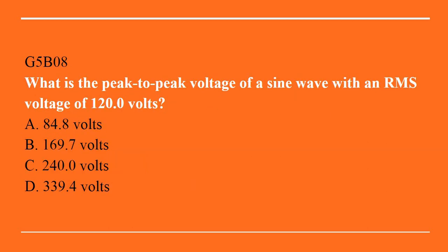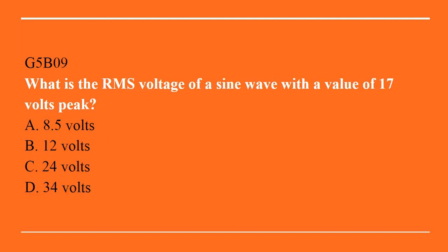G5B08: what is the peak-to-peak voltage of a sine wave with an RMS voltage of 120.0 volts? A. 84.8 volts. B. 169.7 volts. C. 240 volts. Or D. 339.4 volts. Answer is D: 339.4 volts. G5B09: what is the RMS voltage of a sine wave with a value of 17 volts peak? A. 8.5 volts. B. 12 volts. C. 24 volts. Or D. 34 volts. Answer is B: 12 volts.